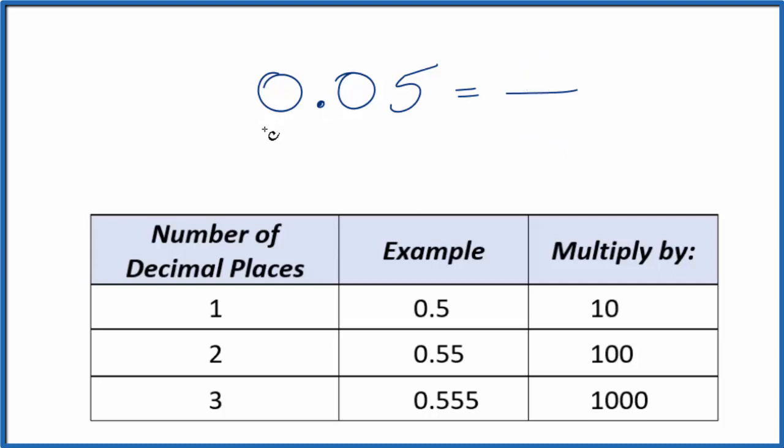The first thing we can do is consider this to be 0.05 over 1. We're just dividing by 1, so it doesn't change the value, but now we have it in the start of fraction form.